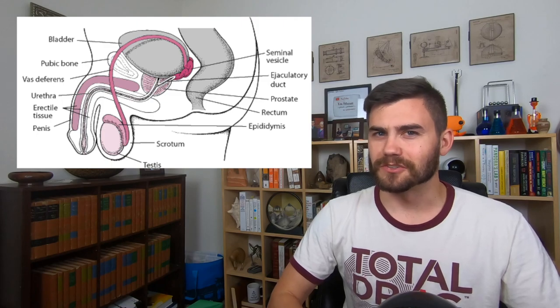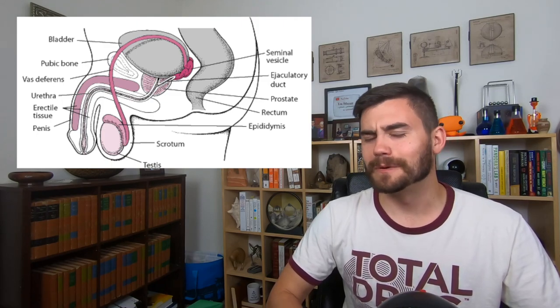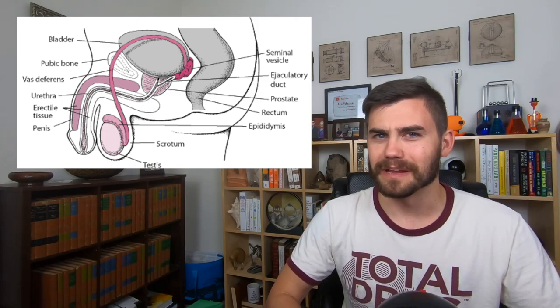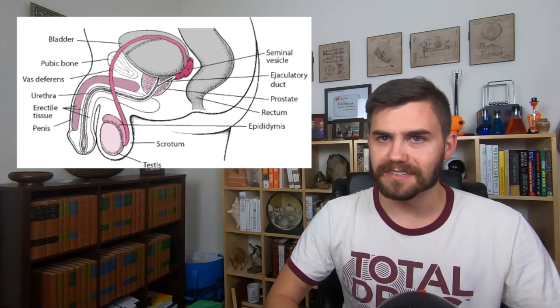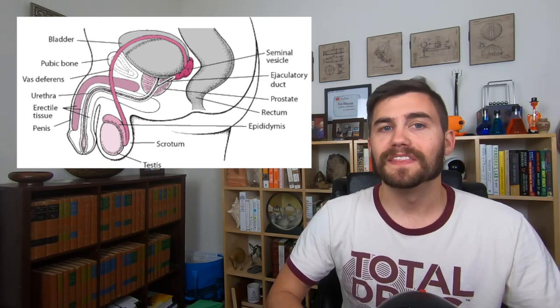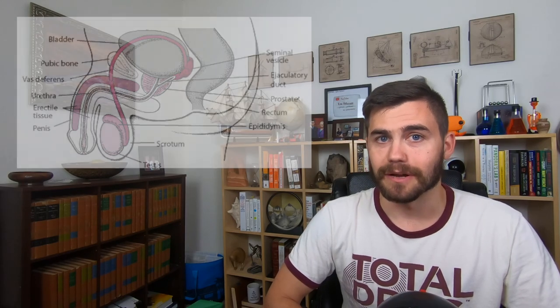It's also why the ductwork for the testes takes this ridiculous route to the urethra. It goes over the front of the pelvis, loops over the top of the bladder, then connects to the base of the urethra. Anyways, I bring all that up because in the condition XX male syndrome, the SRY gene crosses over to the X chromosome. This can only happen during meiosis in the male parent. The male parent passes on an X chromosome with the SRY gene and the mother passes on a normal X chromosome.